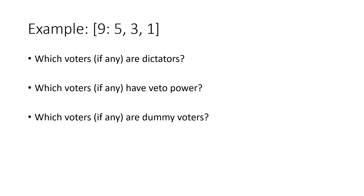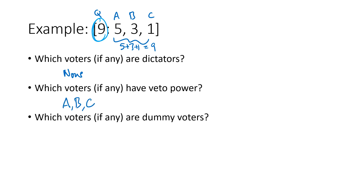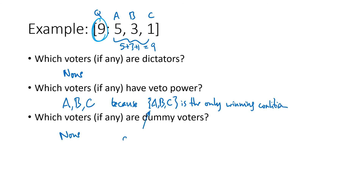Now consider the same system but with the quota changed from 8 to 9. Since 5 plus 3 plus 1 equals exactly 9, the only way to pass anything is if every single voter votes yes unanimously — similar to the jury example. So if any single voter votes no, nothing can pass, meaning every voter has veto power. And none of the voters are dummy voters, because they're all critical to that one winning coalition: A, B, and C working together is the only winning coalition.